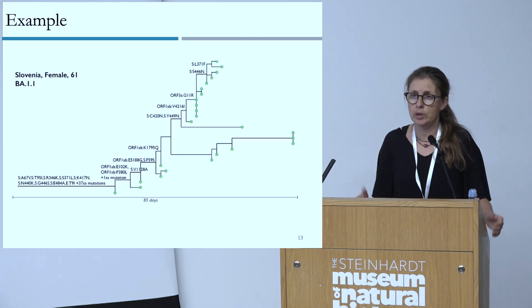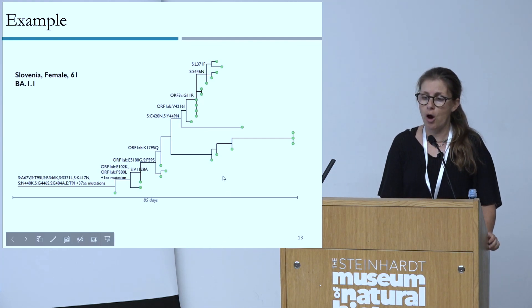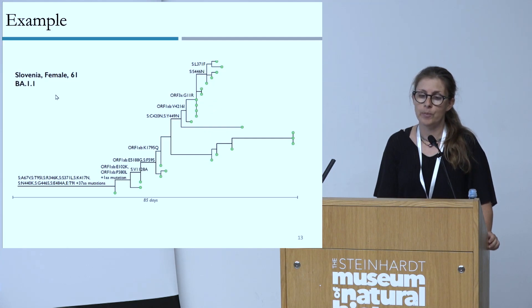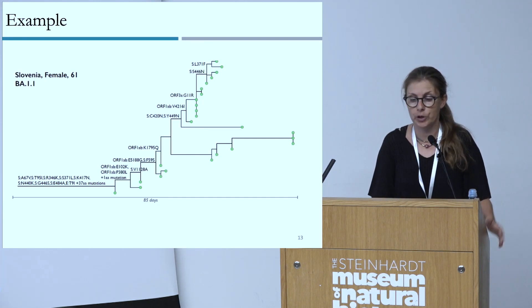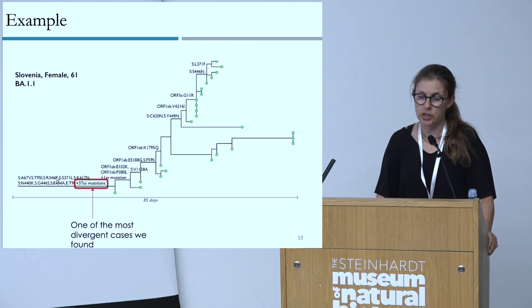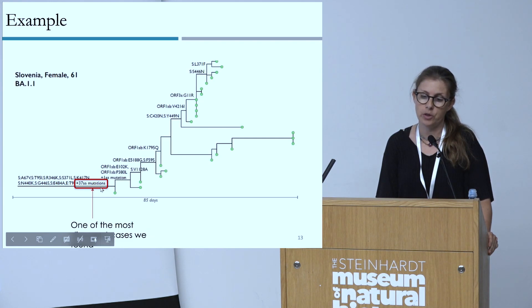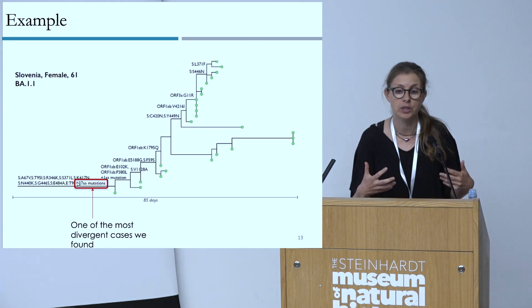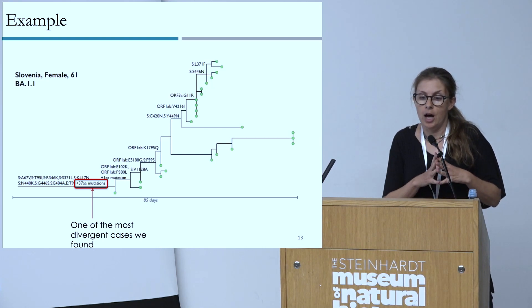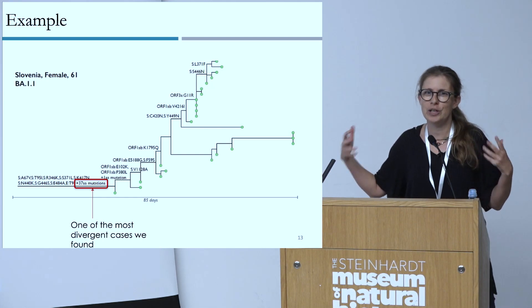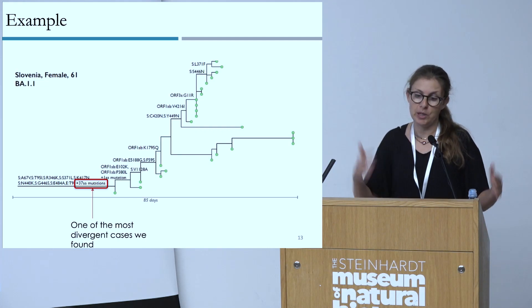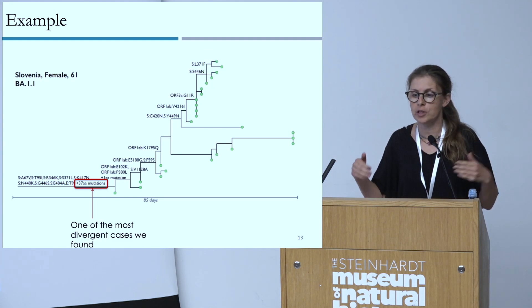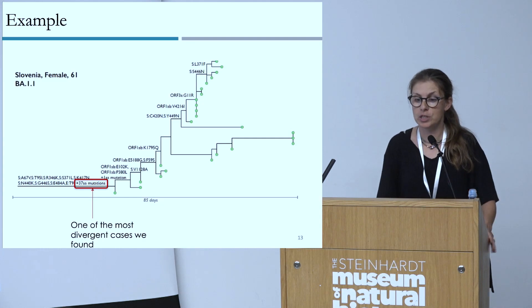To give one convincing example: all of these sequences — the green dots here — are from a single individual from Slovenia, female, 61 years old. The probability that so many sequences on the tree would share exactly the same age, sex, and location by chance is very, very low. This case is particularly interesting because it is one of the most divergent we found, with 37 additional amino acid mutations on this branch. It was also noted by variant hunters who are looking for the next variant. There was concern that this would lead to the next variant — it didn't — but it is definitely a very interesting case.